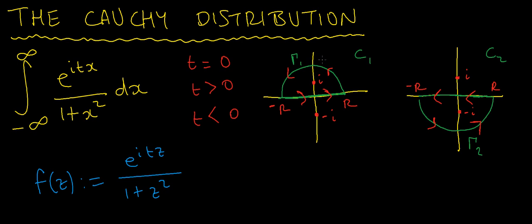In this video we're going to use the method of contour integration on the Cauchy distribution, specifically the characteristic function of the Cauchy distribution. It's the integral from minus infinity to infinity of e to the itx divided by 1 plus x squared dx.